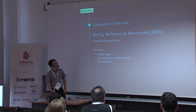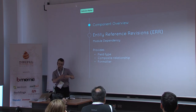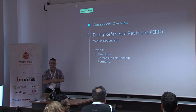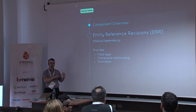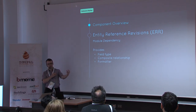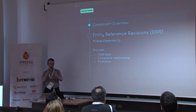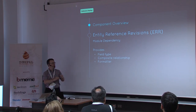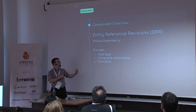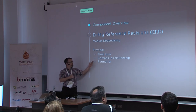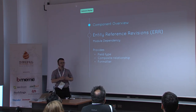You actually need entity reference revisions — the dependency module that provides the field type itself. That is how the reference between the Paragraph entity and the node is stored. When you want to put a Paragraph on a content type, you create an entity reference revision field pointing to a Paragraph. It also provides the concept of a composite relationship.